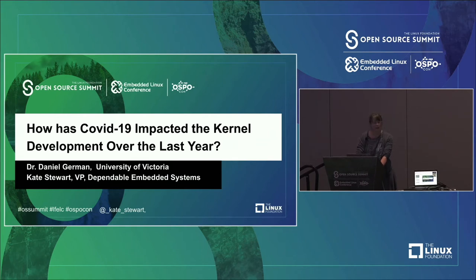One of the key features of open source and general systems is the Linux kernel. And Daniel German is a professor at UVic.